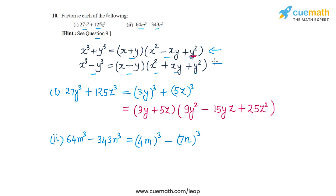Now we're going to use the second identity x³ - y³, where x is 4m and y is 7n. This is going to be equal to x - y, that's 4m - 7n, times x².